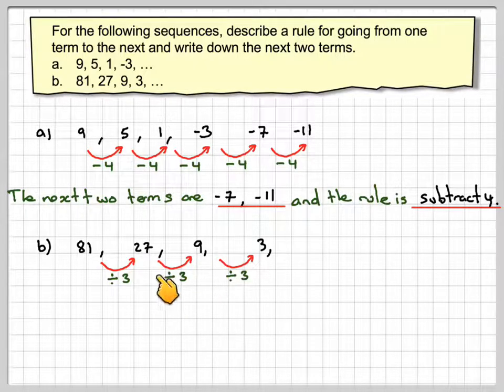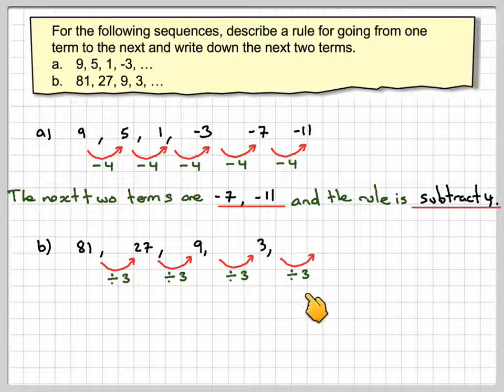So we'll do the same here. Just check. 27 divided by 3 is 9. 9 divided by 3 is 3. So carrying on that pattern, 3 divided by 3 makes 1 and then 1 divided by 3 we'll write as 1 third.